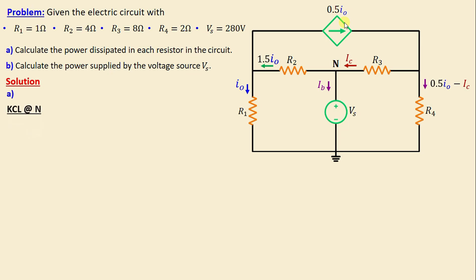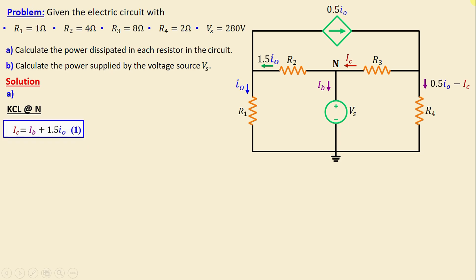By applying Kirchhoff's current law at node N, we can write: IC = IB + 1.5·IO. I will call this Equation 1. Let's move on to Kirchhoff's voltage law.